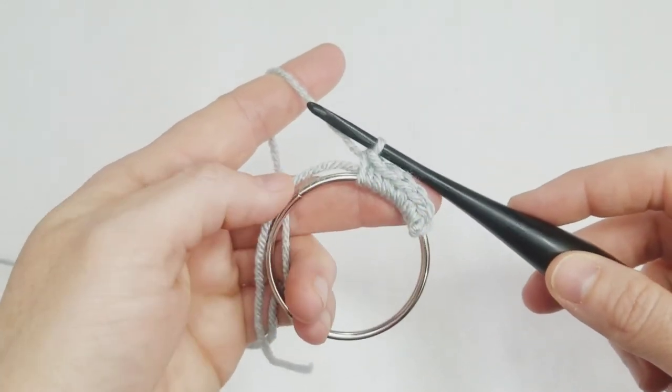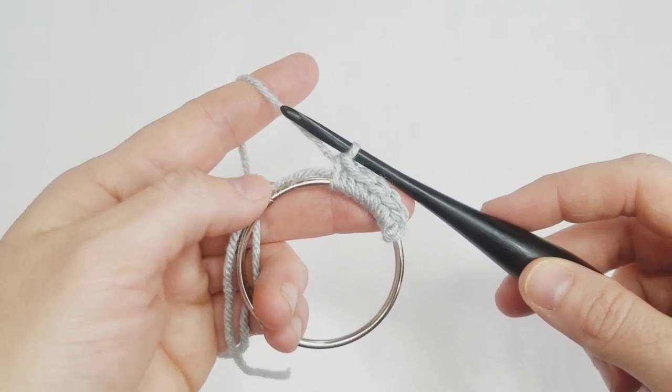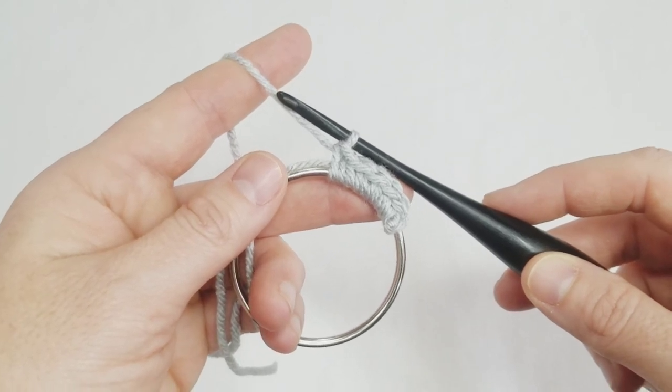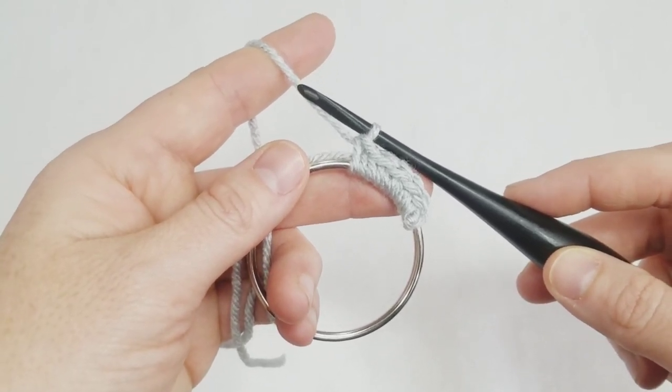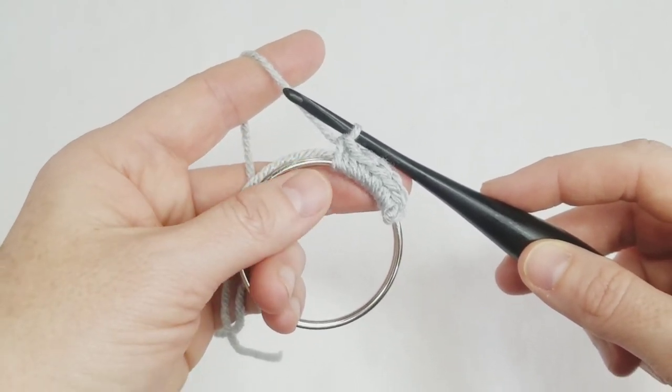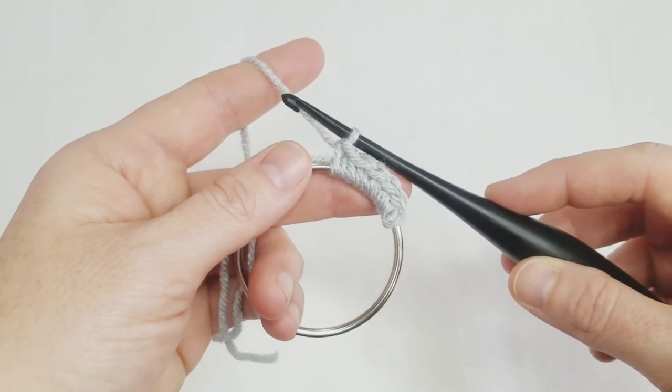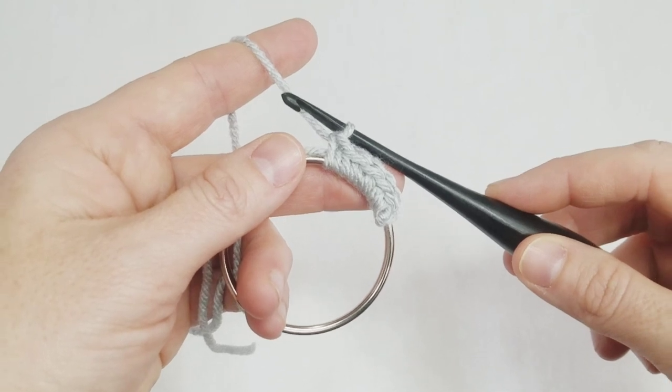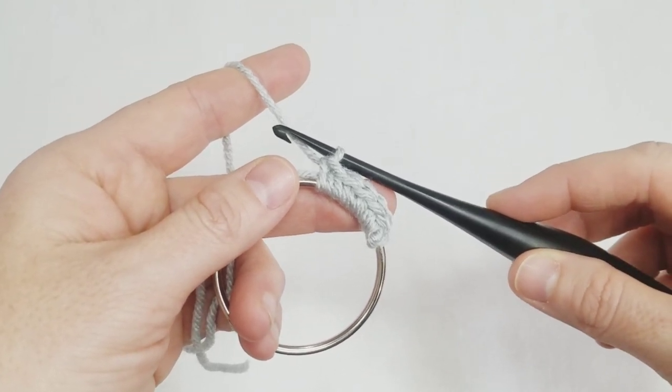So that is how you crochet around a hoop or a ring. Written instructions for this are in the description below, as well as links to the patterns that I use this technique in if you'd like to try it out. Be sure to subscribe so you don't miss out on any tips and tutorials, and happy crafting!